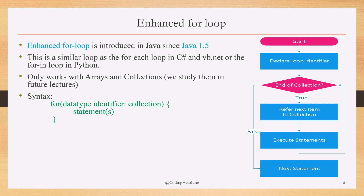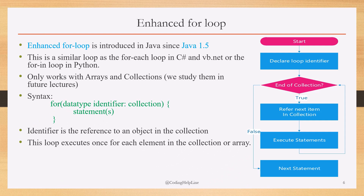The enhanced for loop only works with arrays and collections. The general syntax is: for(DataType identifier : collection) then execute statements. The data type is initialized here, then the collection is checked whether the end is reached. The identifier refers to the current object within the collection during iteration. This loop executes once for each element in the collection or array.